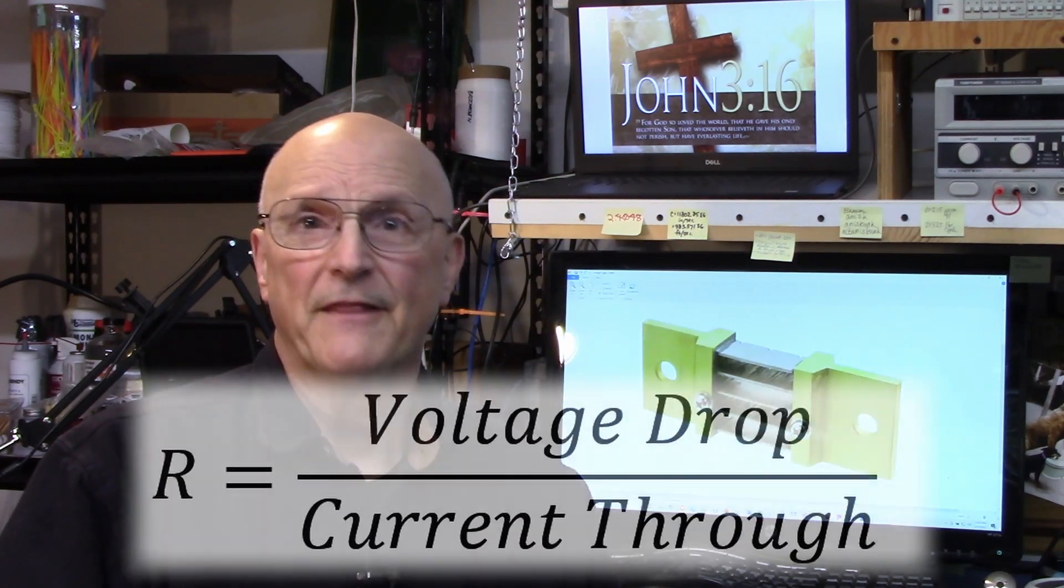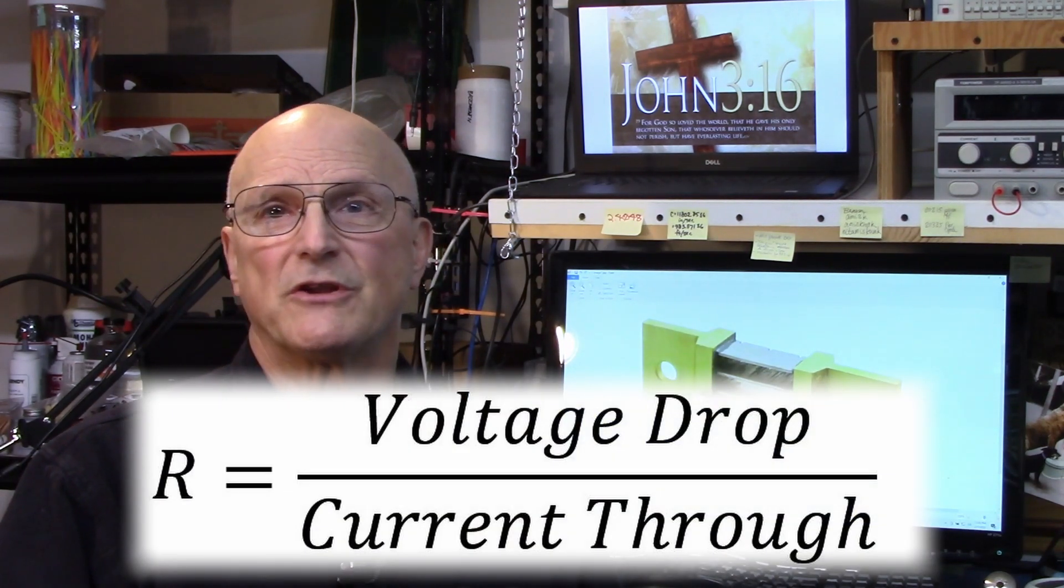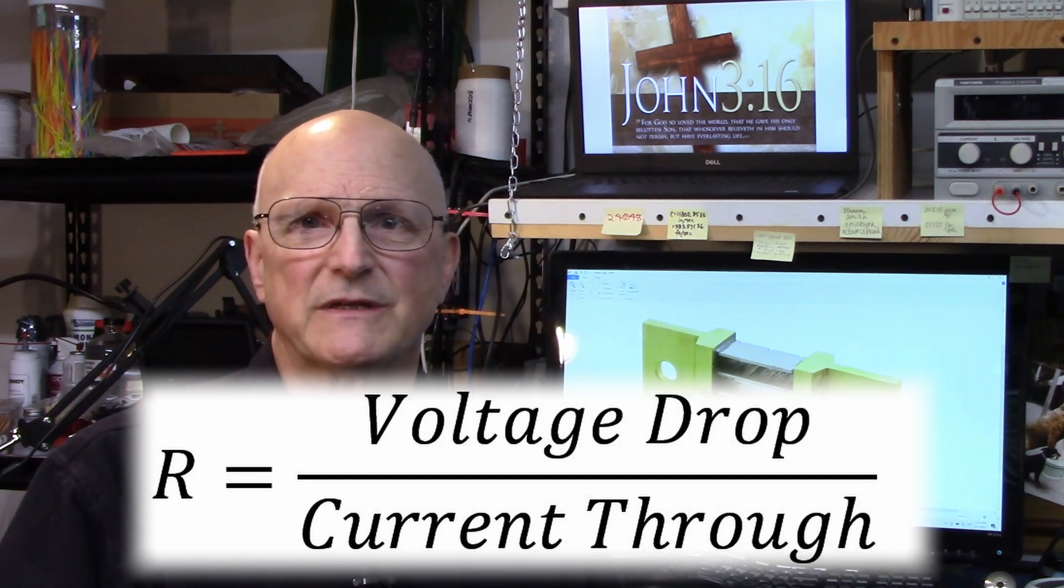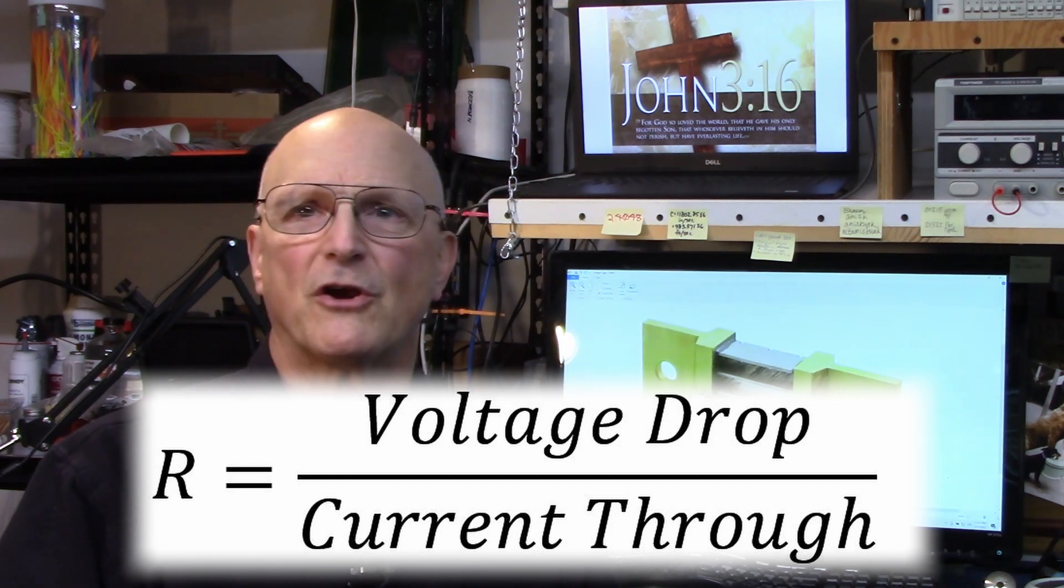The very foundation of this method lays in Ohm's law. When you put a current through a resistor, there will be a voltage drop across the resistor. And we can calculate the resistance using Ohm's law. That resistance is equal to the voltage drop across the resistor divided by the current through the resistor. The challenge we have is in measuring the right voltage drop.